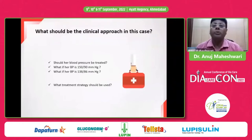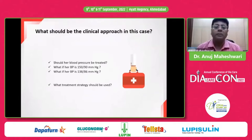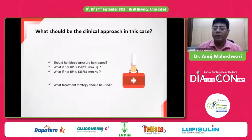The question arises: what should be the clinical approach in this case? Should her blood pressure be treated? What if her blood pressure is 150/90? What if it is 138/86? What treatment strategy should be used as per the current guidelines? Guidelines suggest keeping blood pressure at 130/80. Let's find the evidence and check the rationality of these guidelines.